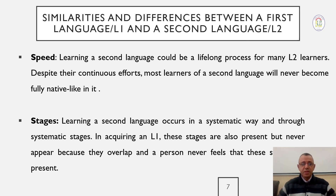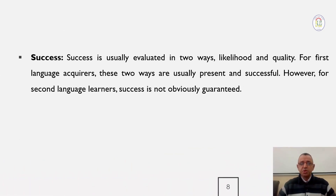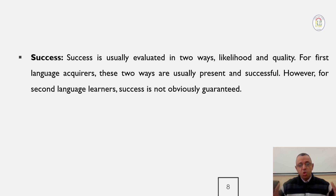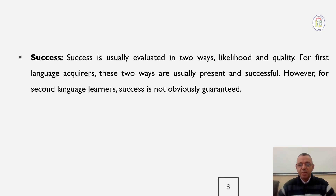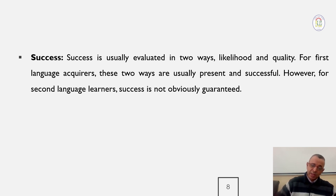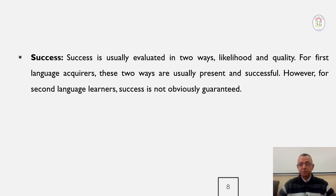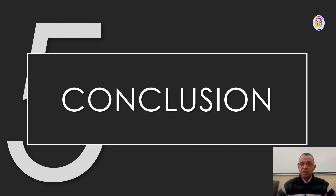The next criterion is success. Success is usually evaluated in two ways: likelihood and quality. For first language acquirers, these two ways are usually present and successful. However, for second language learners, success is not obviously guaranteed. Generally, all people succeed in acquiring their L1 without any problem — even people with some mental difficulties can acquire their L1. For L2, not all people who learn a second language will be successful, so success is not guaranteed. Overall, this is all about the first part of Theme 6. Thank you very much.